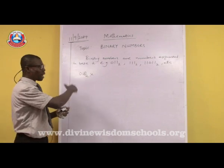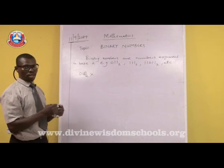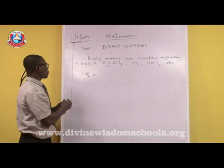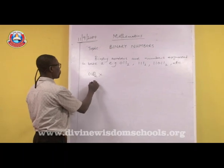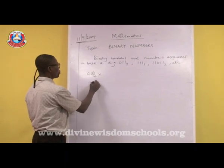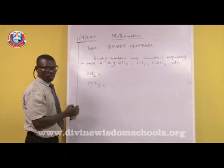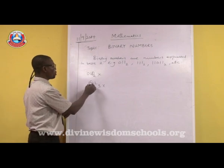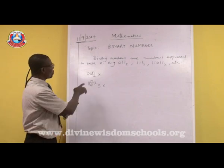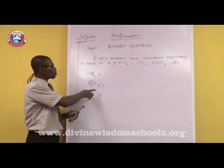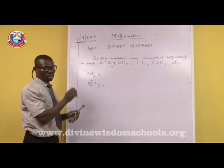This rule cuts across other bases. For instance, if you are working on base 3, the same rule applies. If you have 142 base 3, that is also wrong. The reason is because of the digit 4, which is greater than the base 3.